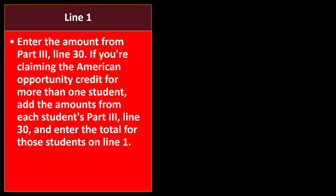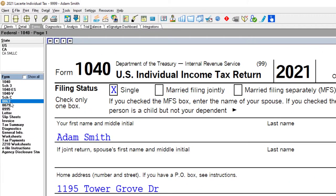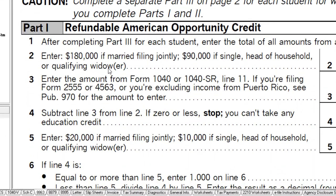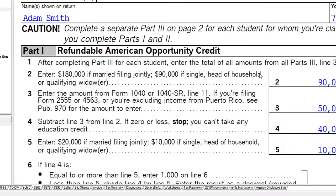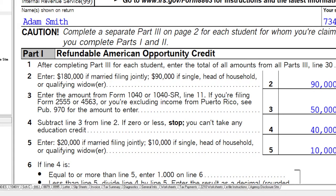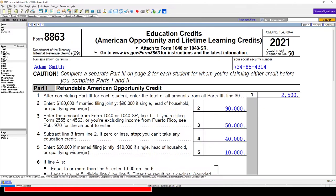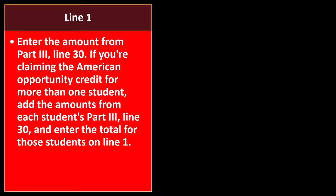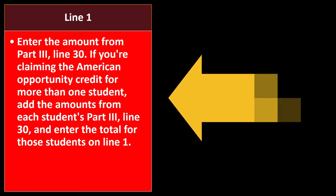Going line by line through Form 8863, line 1, part 1: after completing part 3 for each student, enter the total of all amounts from all part 3 entries on line 1. Specifically, enter the amount from part 3, line 30. If you're claiming the American Opportunity Credit for more than one student, add the amounts from each student's part 3, line 30, and enter the total on line 1.